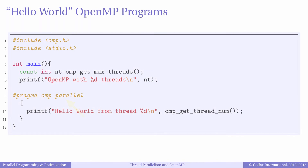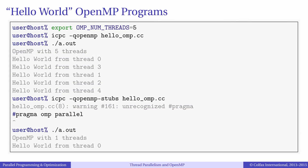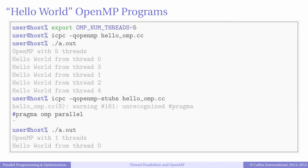Because pragma omp parallel may be treated as a comment, it is possible to serialize an OpenMP application by compiling it with the argument -qopenmp-stubs. With this argument the application becomes single-threaded. This can be used to check the serial implementation of your code or to compare performance difference between multi-threaded and serial versions of your application.